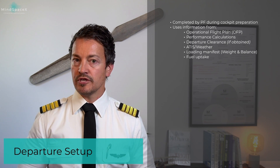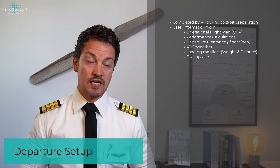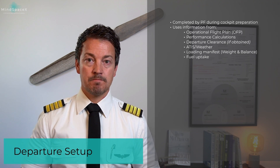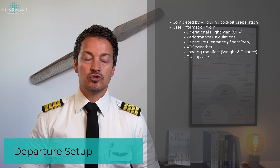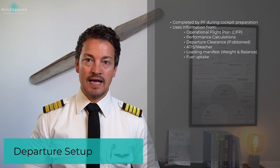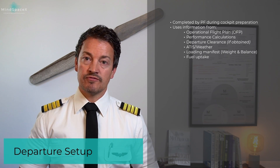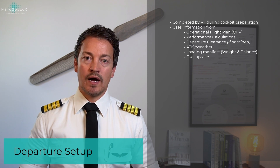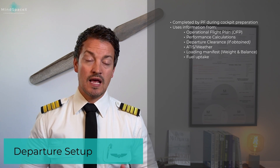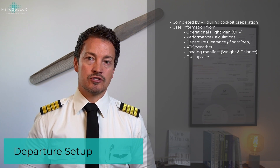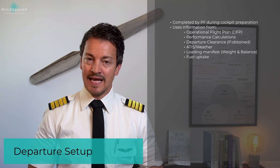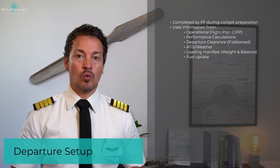This includes the operational flight plan from dispatch, which tells us the routing as well as performance. We will need to have the performance calculated both for takeoff and landing. We will, if obtained, require the departure clearance. This allows us to select the correct runway and instructions for departure. We will need to have picked up the latest weather using the ATIS at the airport or local weather reports.